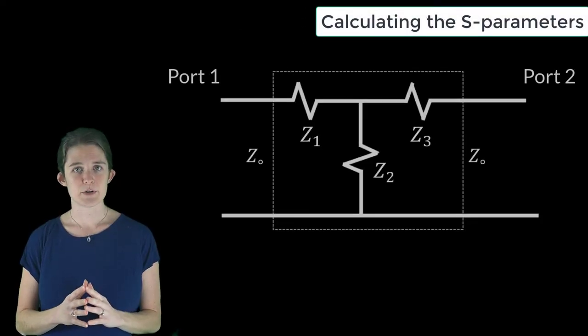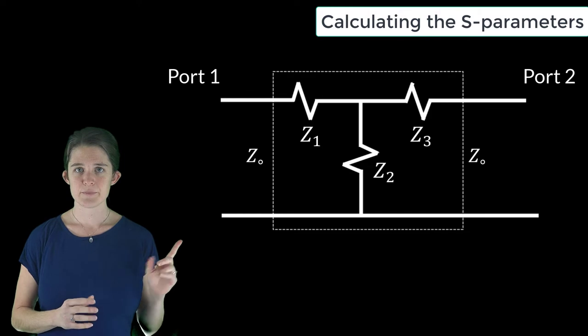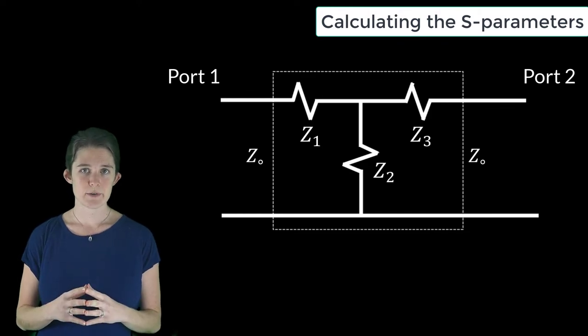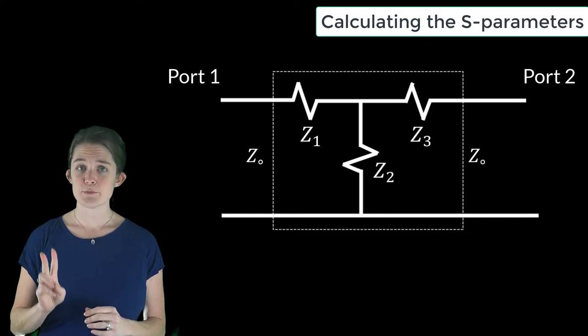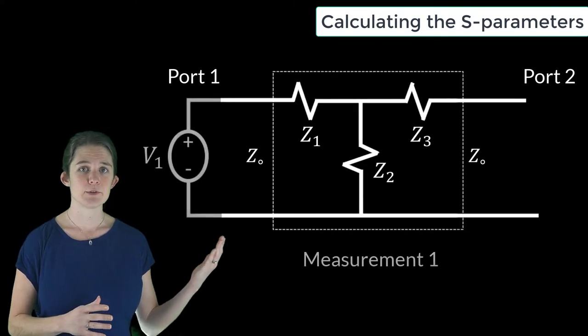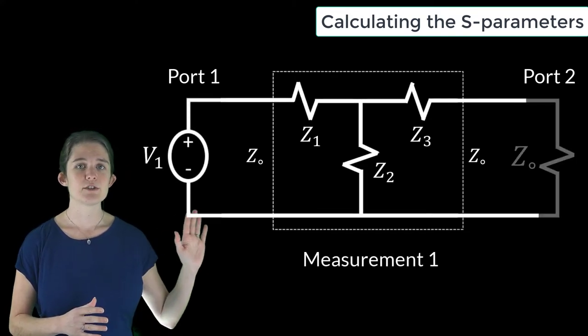Suppose you wish to find the S-parameters for this simple network. Since this is a two-port network, its characterization will involve two measurement arrangements. The first will involve a test voltage on the left side and a matched termination on the right.